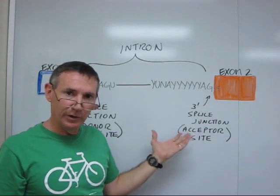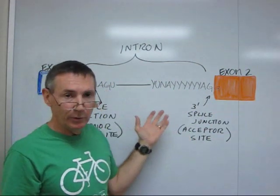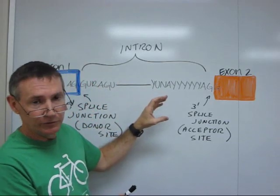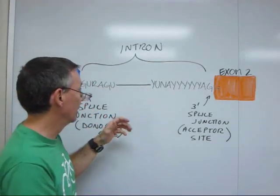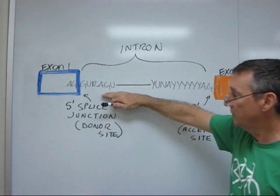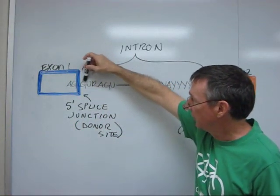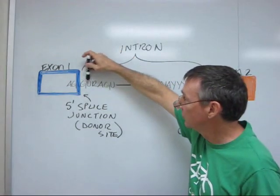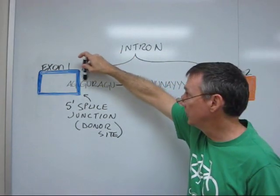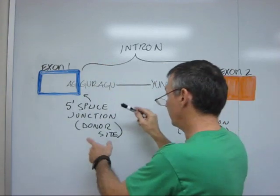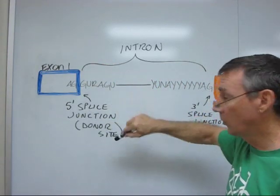The intron's length can vary tremendously, and the sequence within the intron is highly variable. But there's some consensus sequence at the two ends of the intron. So at this end, the 5' splice junction, we have this characteristic sequence. There's some variability in this, but almost always the first two nucleotides at the 5' end of the intron would be GU. This is known as the 5' splice junction, or the donor site.